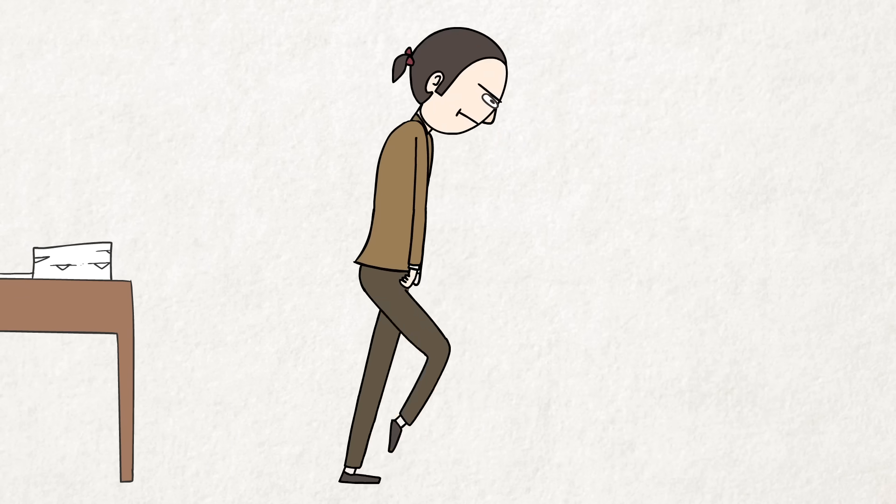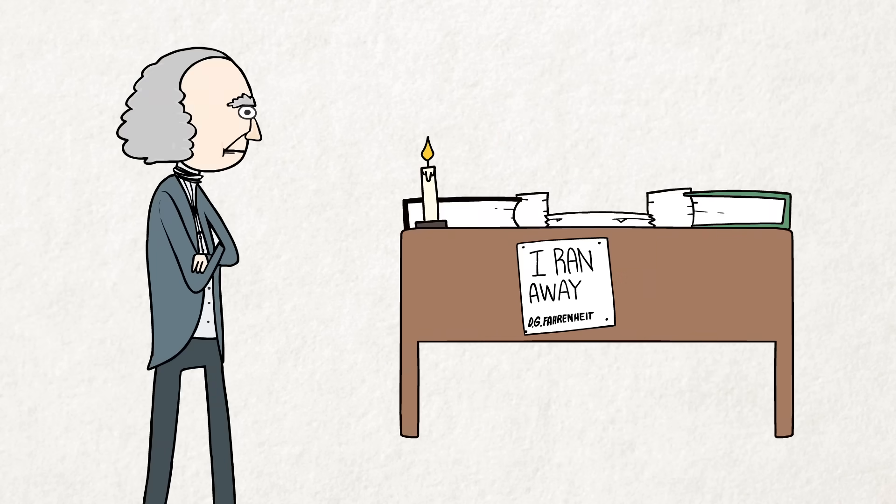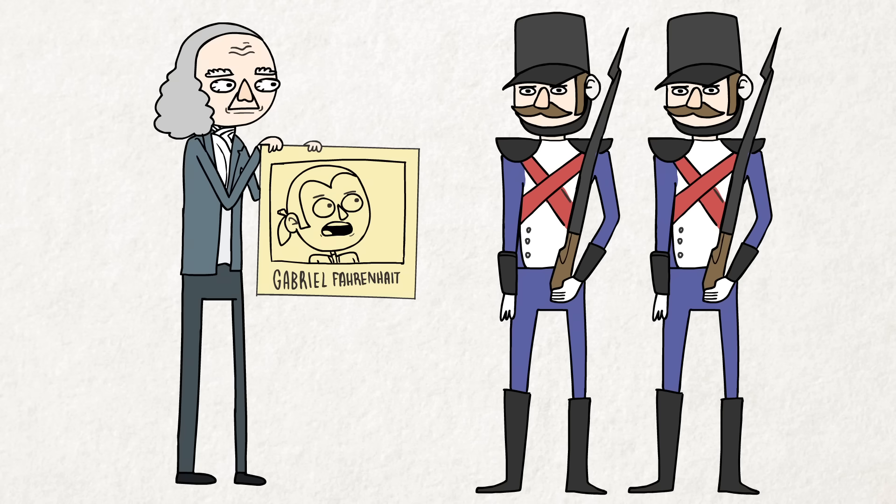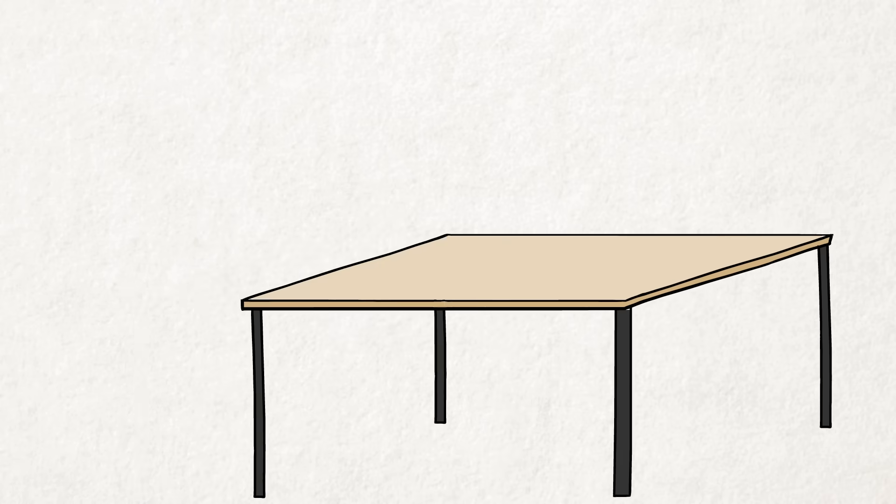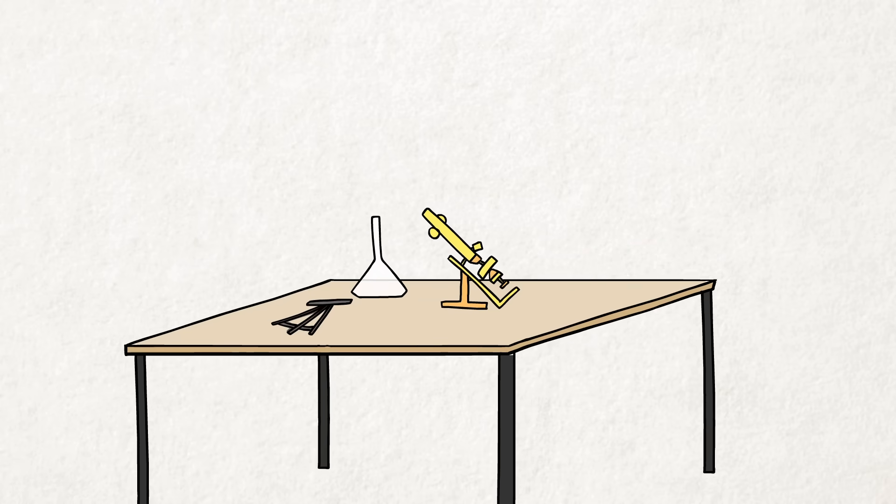But Fahrenheit couldn't stand his apprenticeship and ran away so many times that his employer put out a warrant for his arrest. Traveling from city to city around Europe, he became fascinated with scientific instruments, and in particular, thermometers.